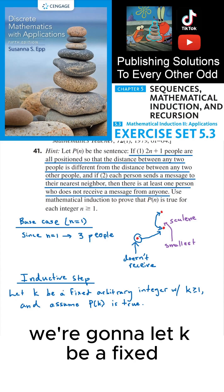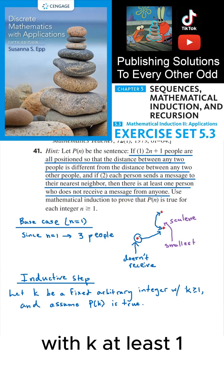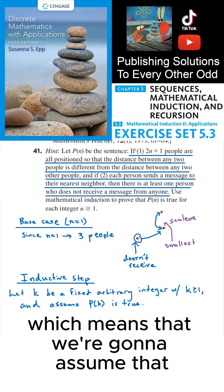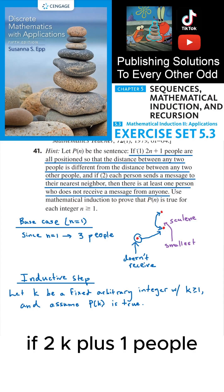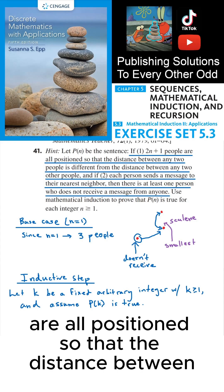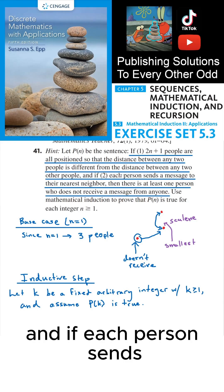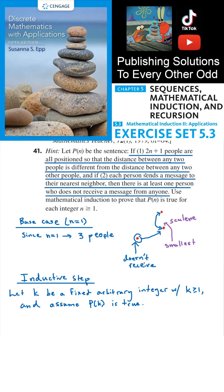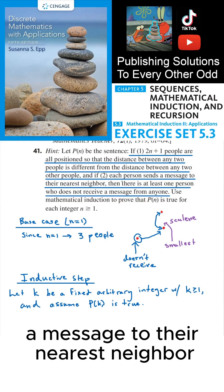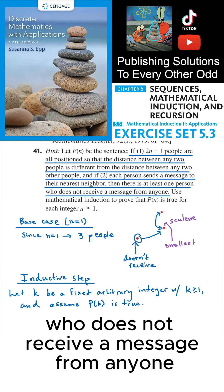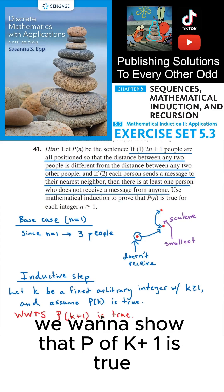For the inductive step, we let k be a fixed arbitrary integer with k≥1, and we assume P(k) is true: if 2k+1 people are all positioned so that the distance between any two people is different from the distance between any two other people, and if each person sends a message to their nearest neighbor, then there is at least one person who does not receive a message from anyone. We want to show that P(k+1) is true.